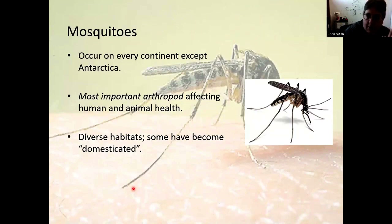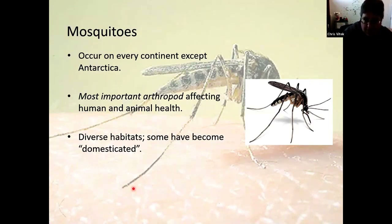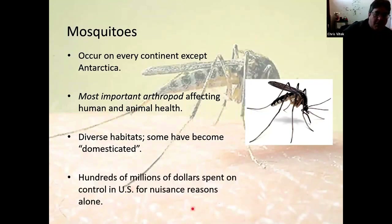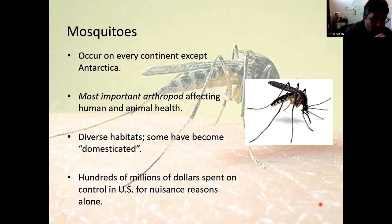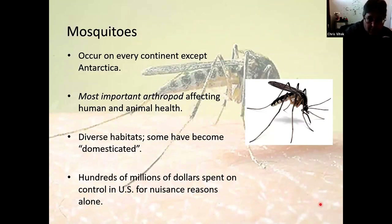Mosquitoes live in a lot of different areas. Some mosquitoes have become domesticated — they've adapted and evolved to live in close proximity to people, feed on people, live in people's dwellings, and breed in habitats that people provide. There's a lot of money spent on vector-borne disease — not just for the diseases themselves but for nuisance concerns as well. Hundreds of millions of dollars are spent trying to control mosquito populations and understand these diseases. There's a lot of money in this field for people that want to go into it.